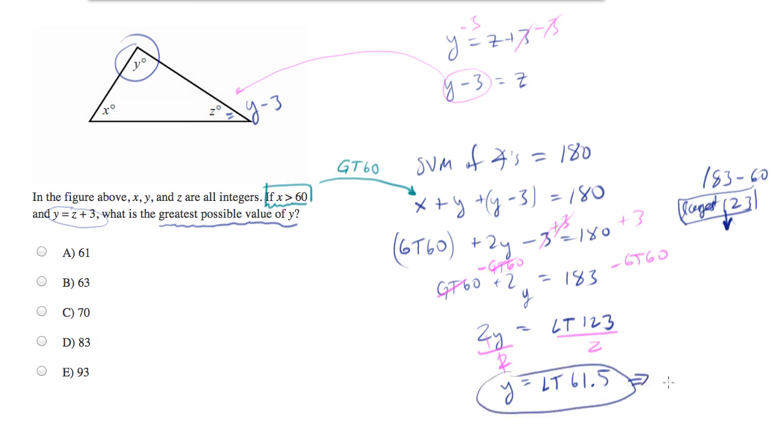And you can convert this into y is less than 61.5 if you want to put that into a notation which is more familiar. So now we can solve this problem. We're told that y is an integer. And now we want to know the greatest possible value of y. So if y is an integer and it's less than 61.5, what's the largest thing that it could be? 61.